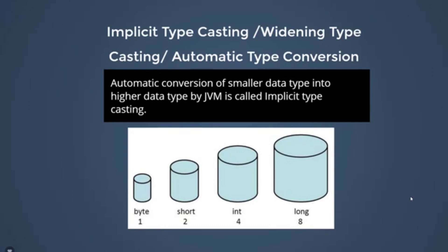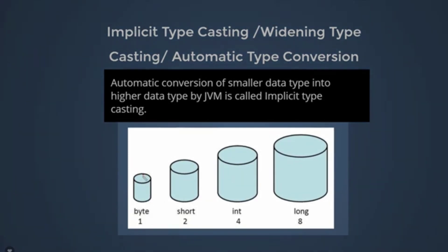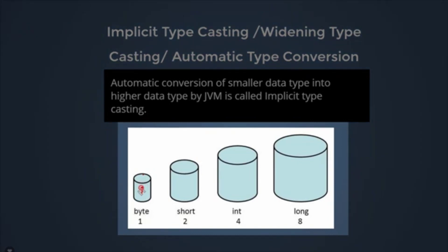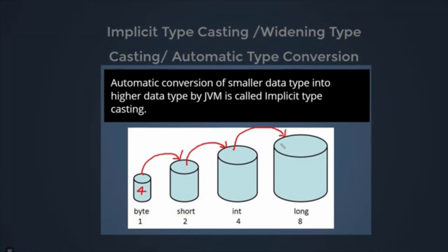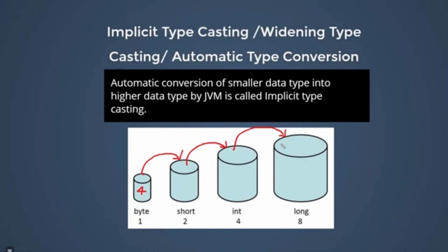For example, byte is smaller than short, short is smaller than int, and int is smaller than long. So whenever we convert byte into short, or short into int, or int into long, that conversion will be done automatically. If we have value 4 stored in byte and we want to convert it into short, it will be done automatically. The reason is that byte has a memory size of 1, short is 2, int is 4, and long is 8. So that conversion is automatically done — smaller data type to higher data type conversion is called implicit typecasting.